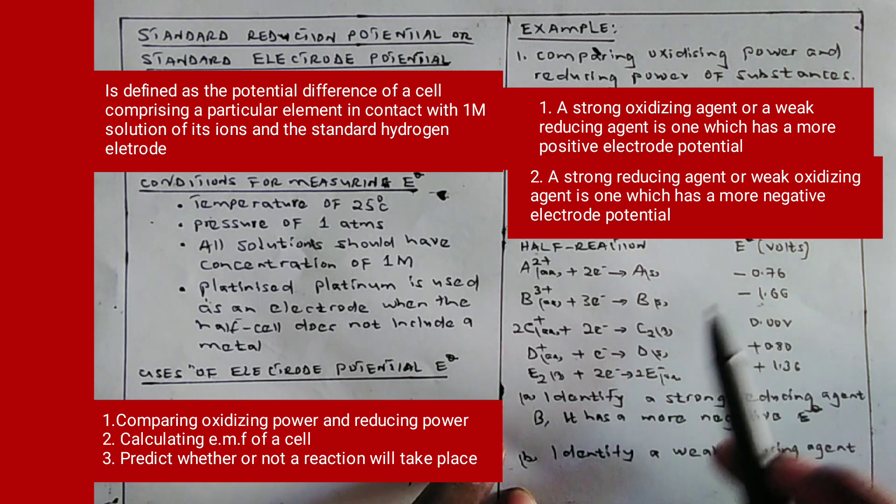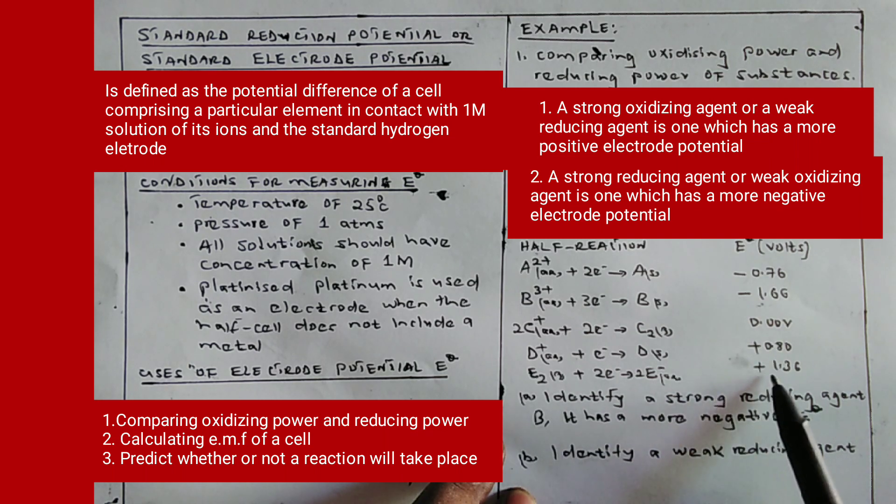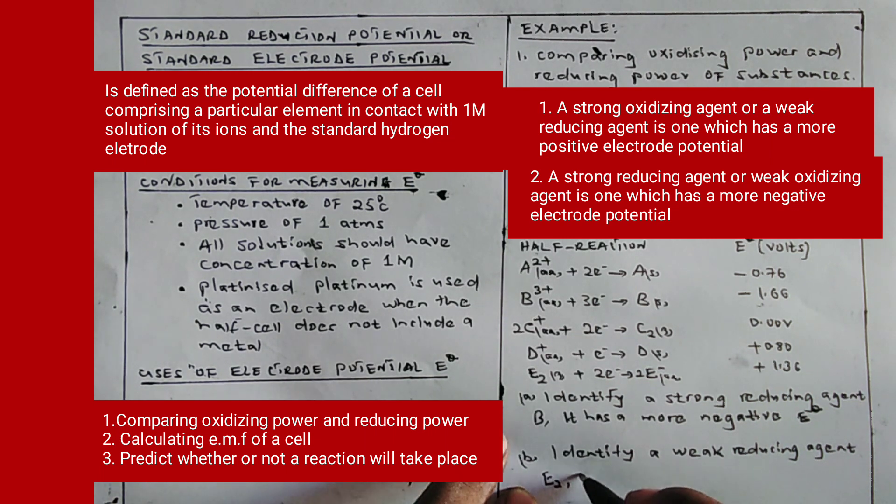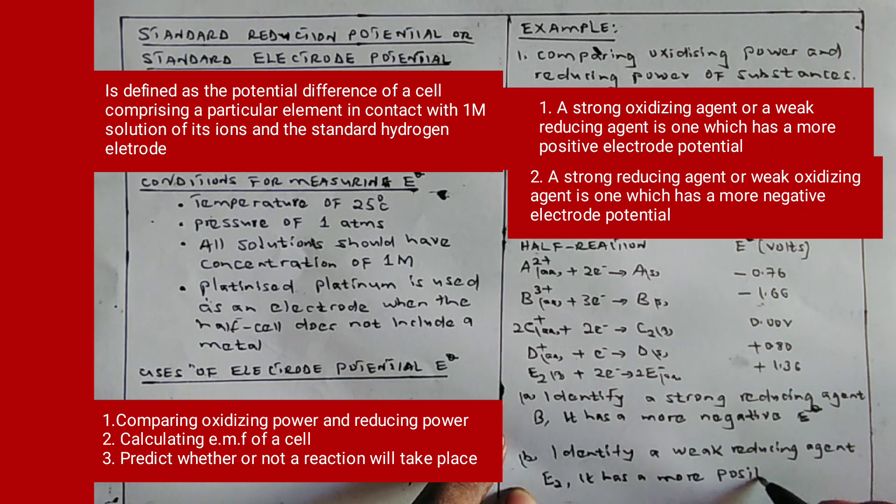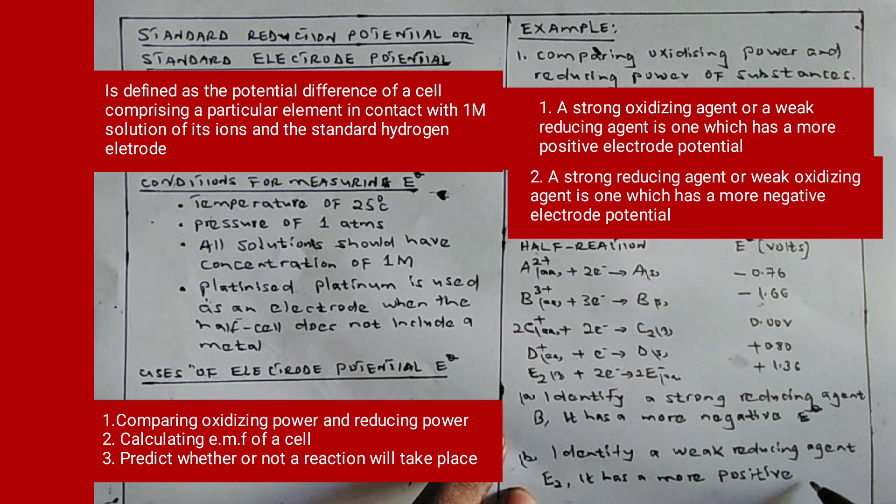In our example, the element with the most positive electrode potential is this one here. So my answer will be E2. The reason: it has a more positive E0 value, a more positive electrode potential.